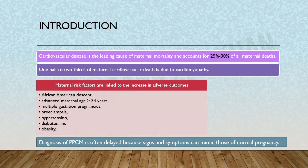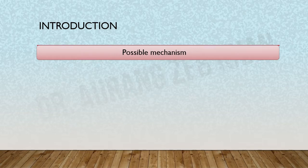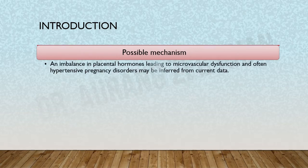Normal pregnancy can sometimes present with signs and symptoms that can be confused with those of peripartum cardiomyopathy. Examples include breathing difficulty, dyspnea on exertion, orthopnea, and pedal edema. One should be quite vigilant while clinically assessing these patients.